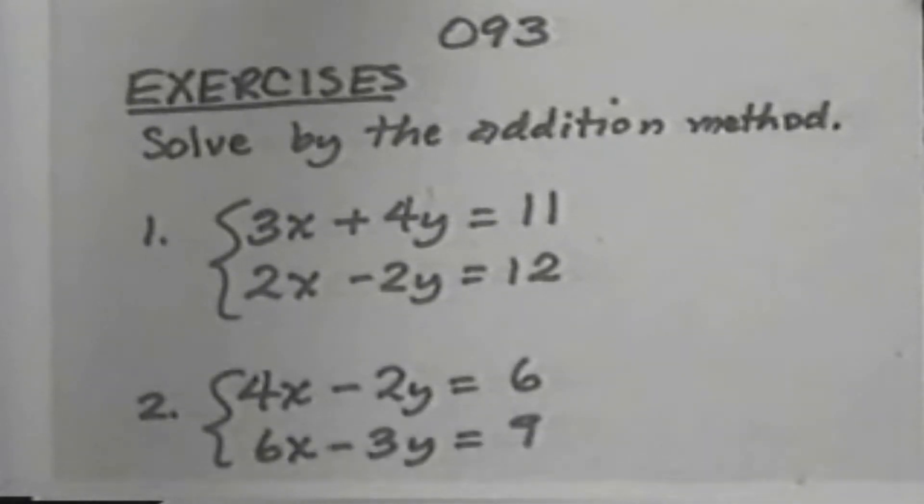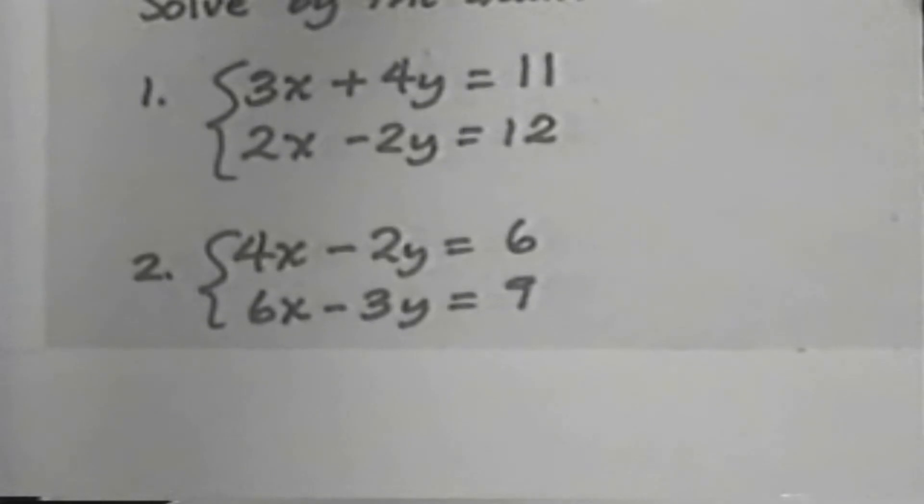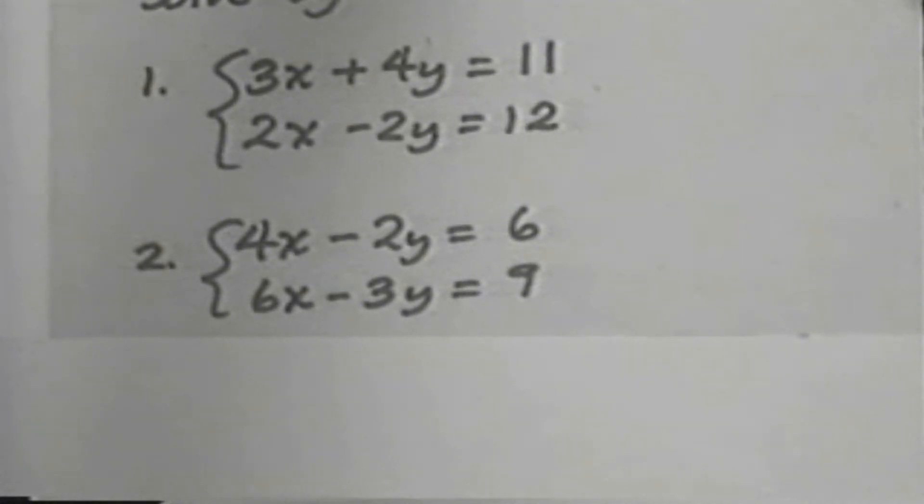Exercise 2: 4x subtract 2y equals 6, 6x subtract 3y equals 9.